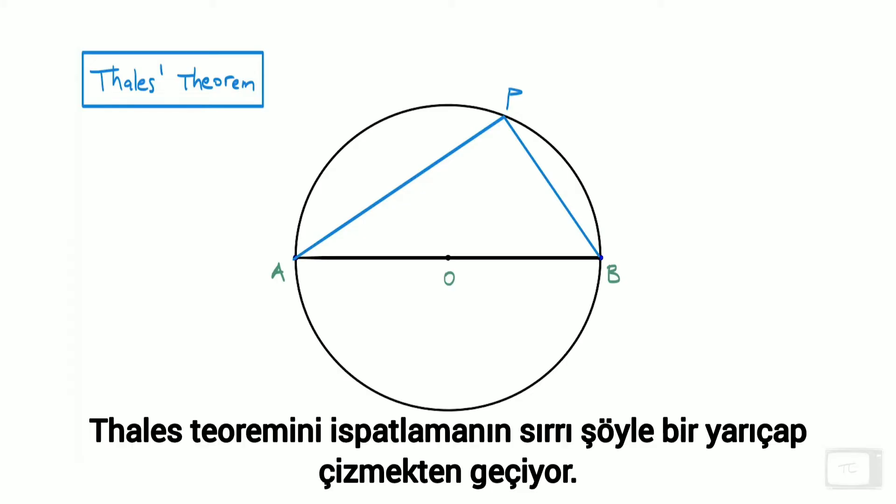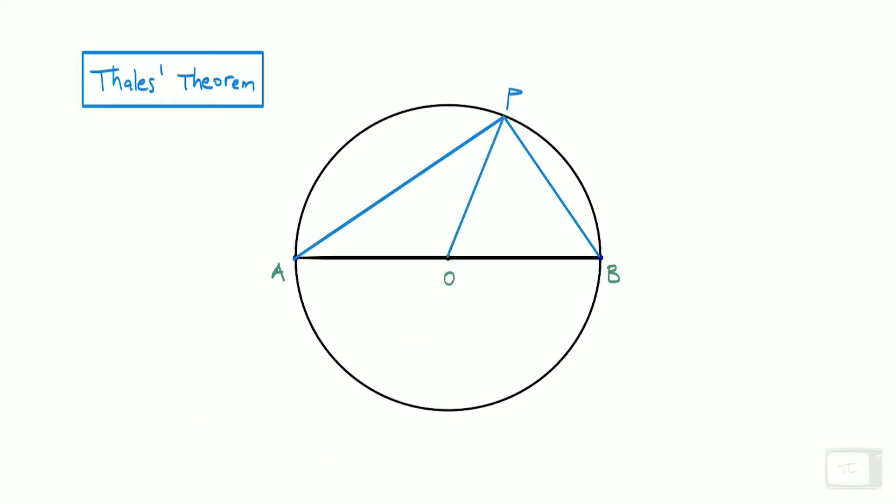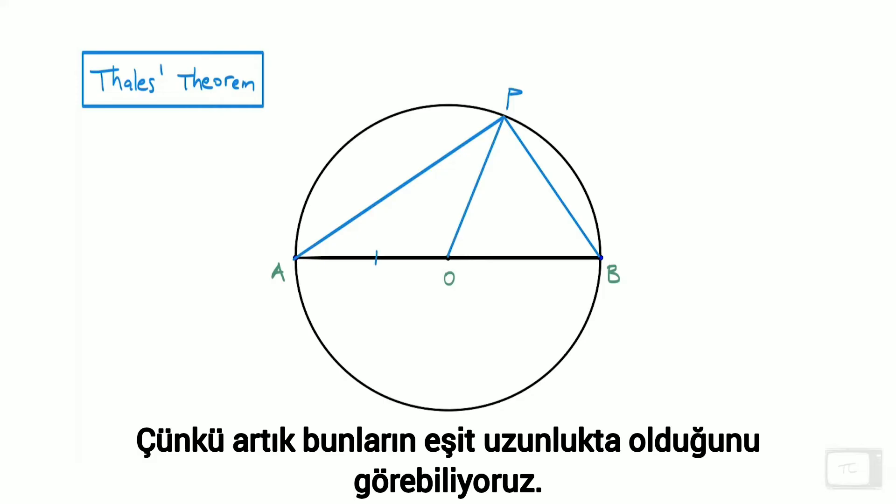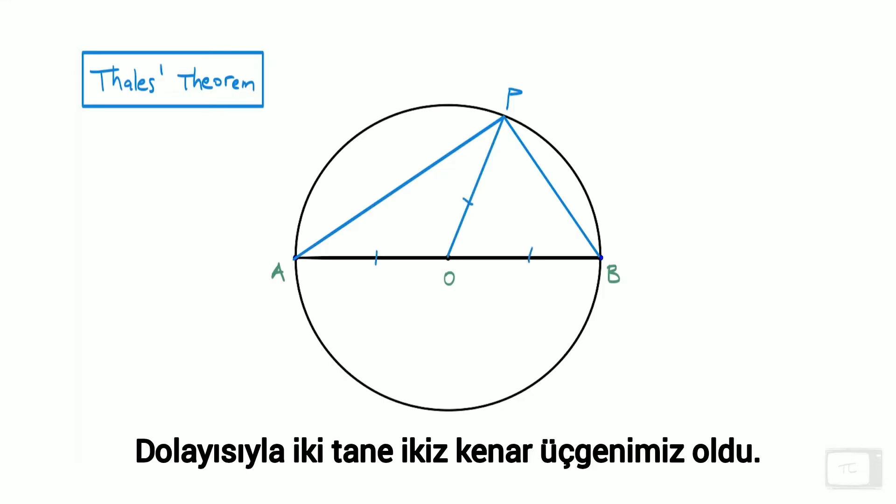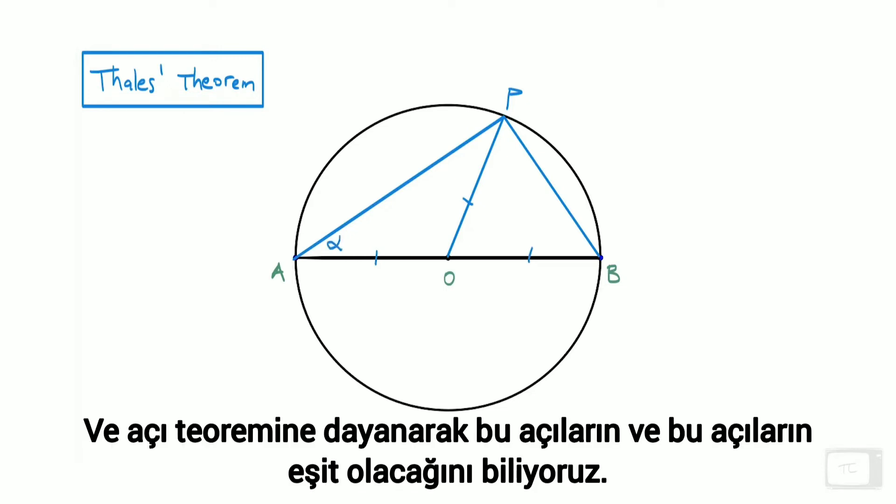The trick to proving Thales' theorem is to draw in another radius. Now we can observe that these are all equal length, giving us two isosceles triangles. By the base angle theorem, these angles will be the same, and these angles will be the same.